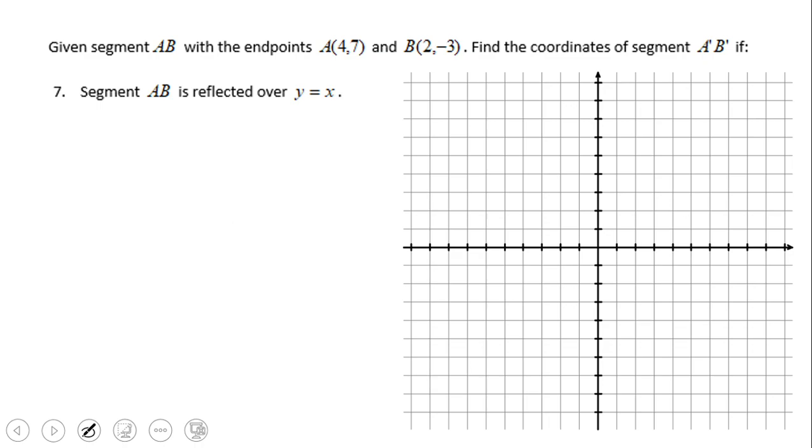First of all, let's see how y equals x looks like. In case you do not remember, this is y equals x. It is the line that bisects, or cuts in half, quadrant 1 and quadrant 3.